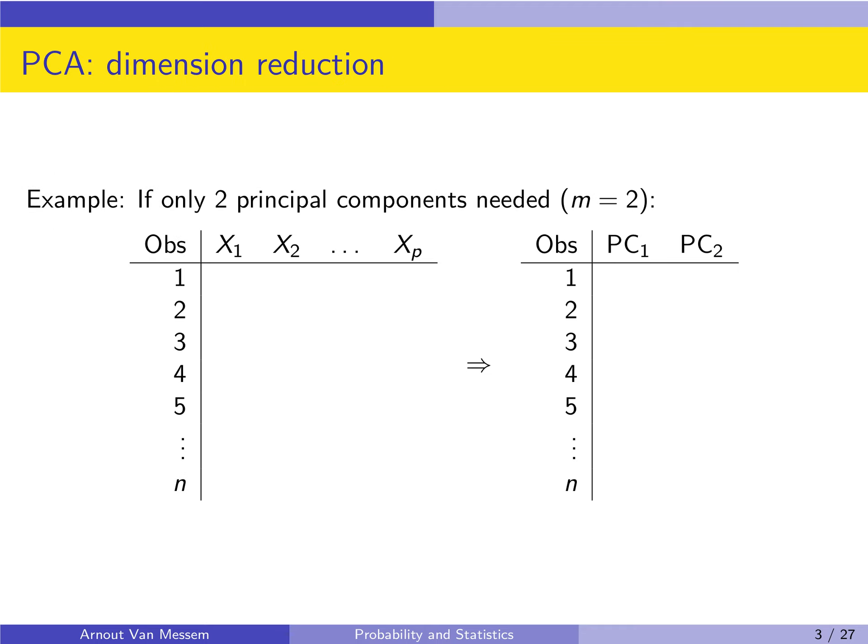In this example, we go from p variables to only two principal components. We have initially an n times p matrix — n observations, p variables — we construct the principal components, keep only two of them, PC1 and PC2, giving us a new dataset of size n times 2, in such a way that most of the information in the old dataset is also available in the new dataset.